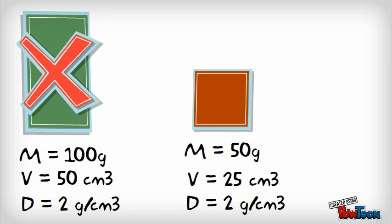This is true because if you cut an object in half, you're halving both the mass and the volume, so the ratio between them is still the same.